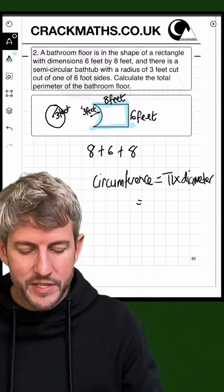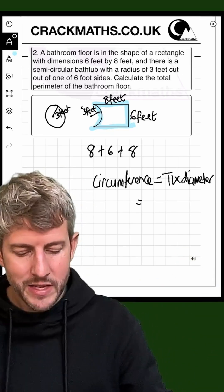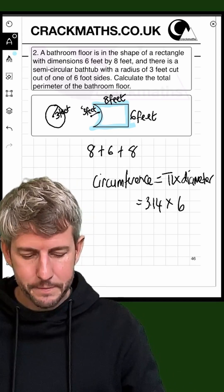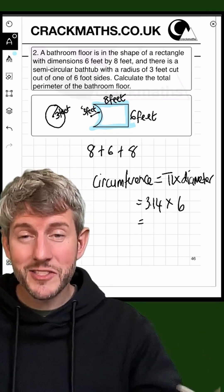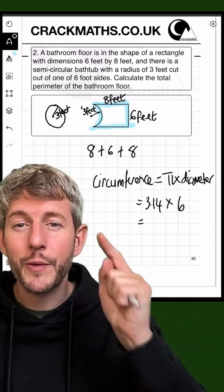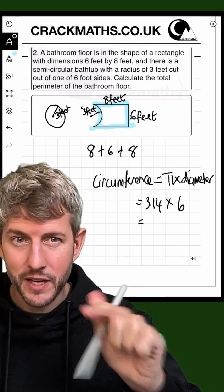So the circumference of this circle here is going to be 3.14 times 6. So first of all, let's do that to get the circumference of the full circle, and then what we can do is halve it to get the circumference of the half circle.